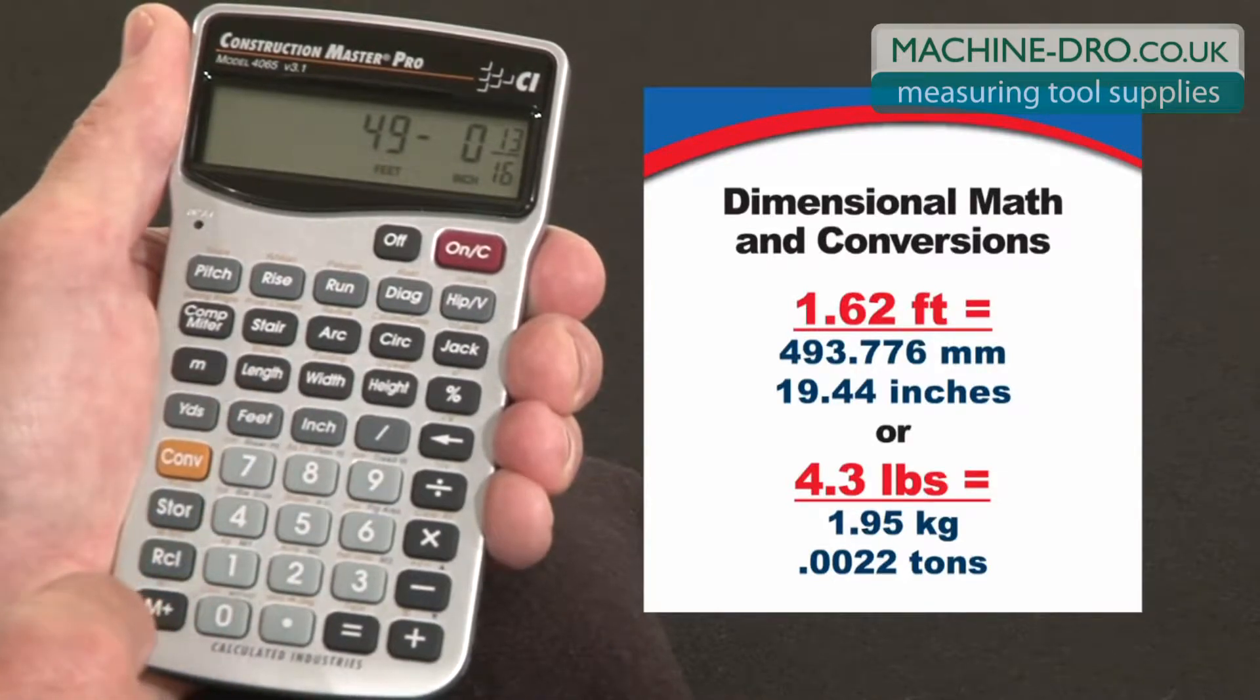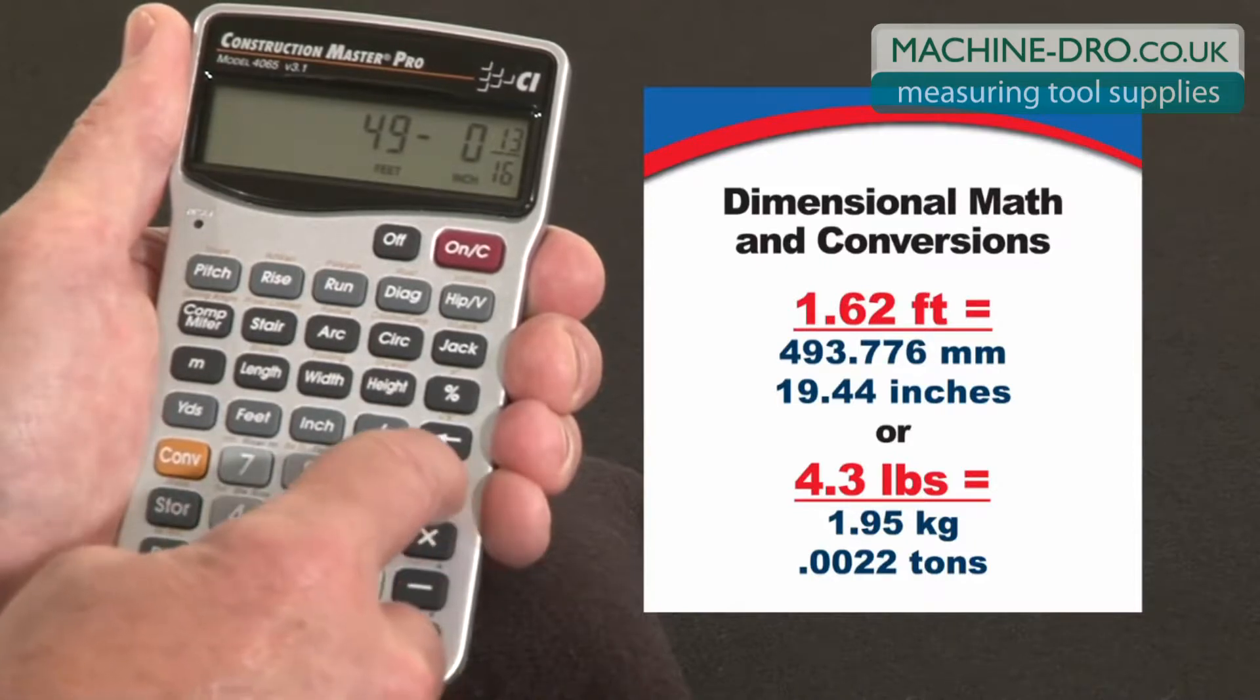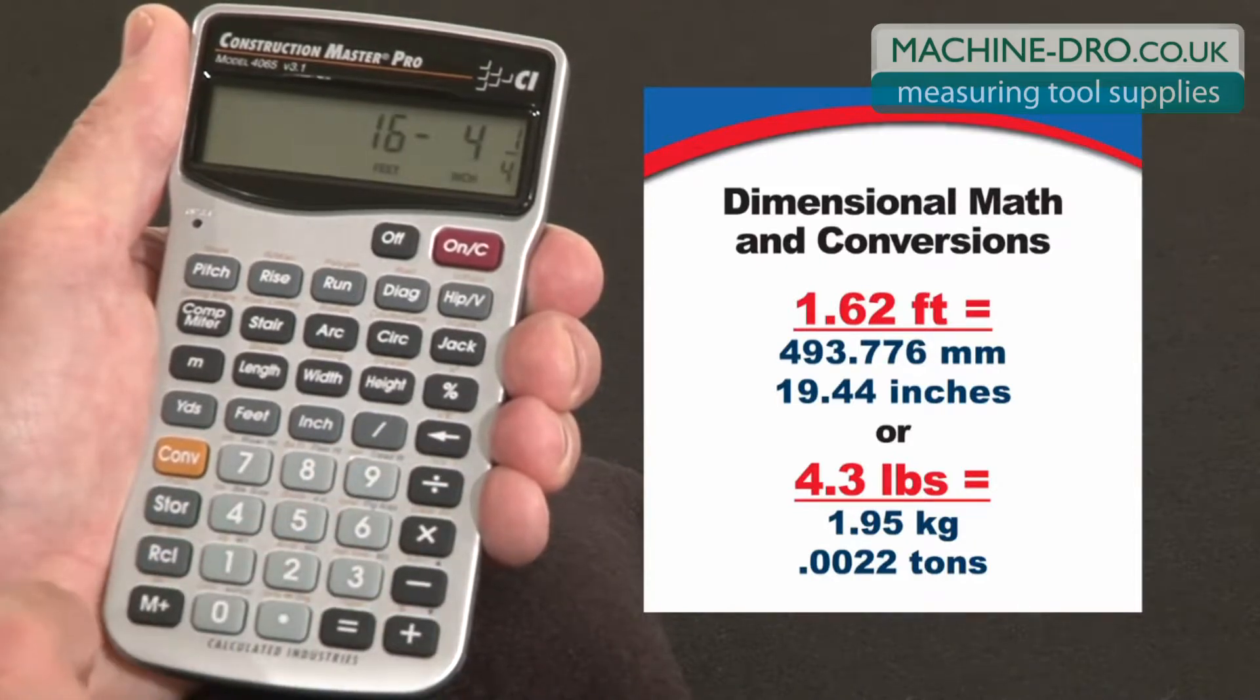So now you can add, subtract, multiply, or divide these. Let's say we want to divide that by 3 for equal spacing. Divide by 3 equals 16.4.25.